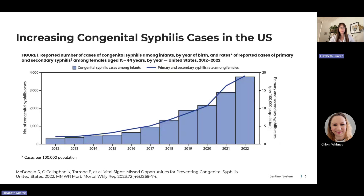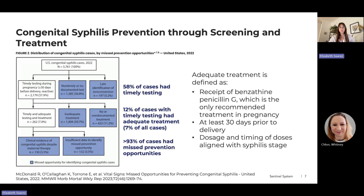This figure was taken from a Morbidity and Mortality Weekly Report from the CDC published in 2023. It demonstrates the steep rise in primary and secondary syphilis among reproductive age females since 2012, shown in the blue line, and then the corresponding rise in congenital syphilis cases in newborns, shown by the blue bars. In this analysis of congenital syphilis cases, the authors identified missed prevention opportunities.